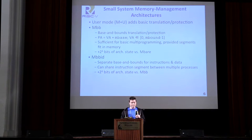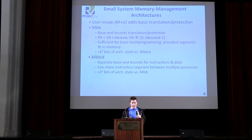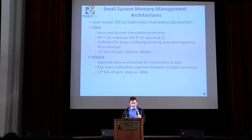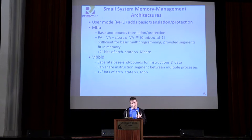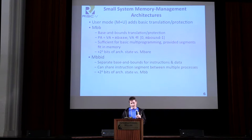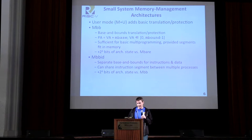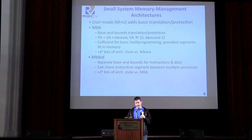Even some embedded systems want some isolation between application and system software, and we wanted to provide a way of doing that without requiring full page-based virtual memory. Our means for doing that was to add basic base-and-bounds addressing support — addressing translation and protection — wherein physical addresses are computed by adding a base to whatever application virtual address you have, and the virtual addresses are also bounds-checked so you can't clobber the system memory space. This is pretty simple to implement: you need a base register and a bounds register — just an adder and a comparator — so not a whole lot of hardware for a substantial improvement in isolation.